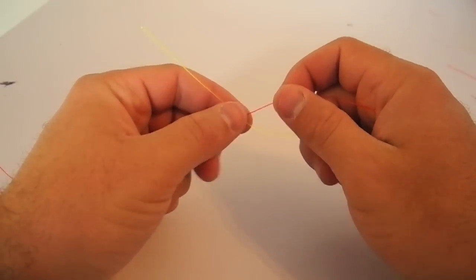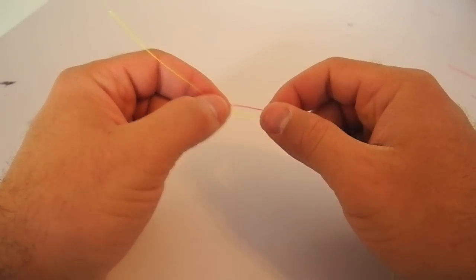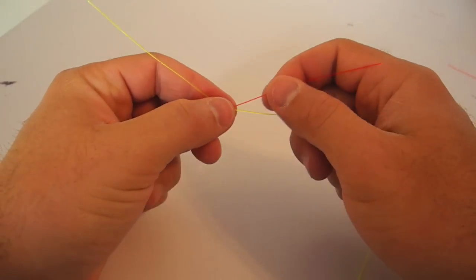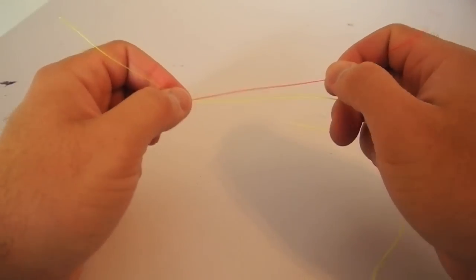Now what we're going to tie is the Orvis knot or the figure eight tippet knot, whatever you want to call it. We're going to tie it with your hemostats.